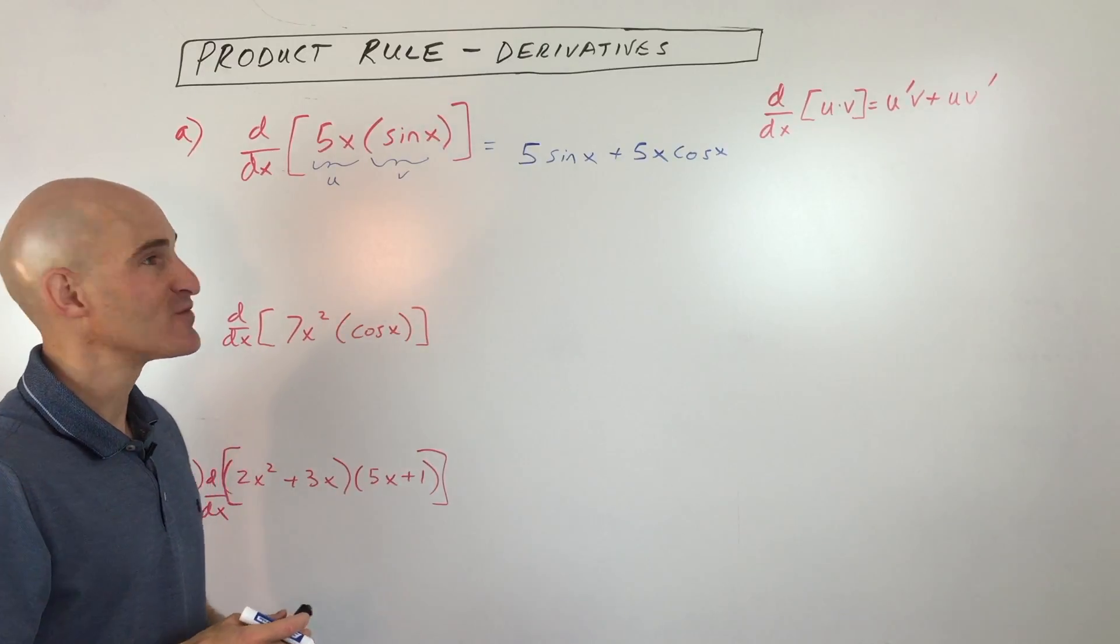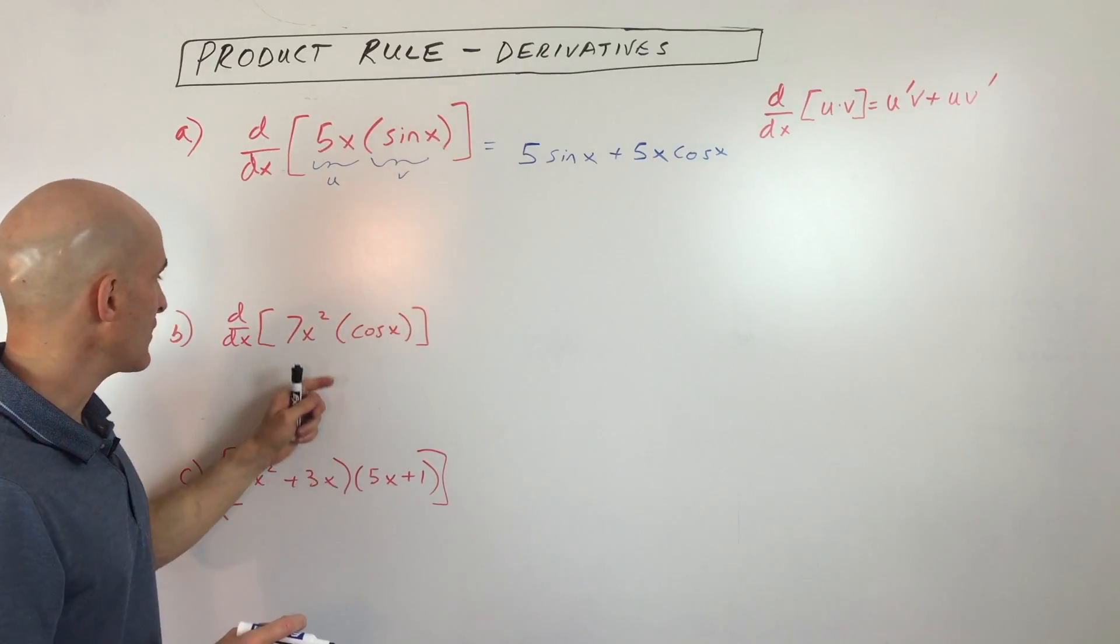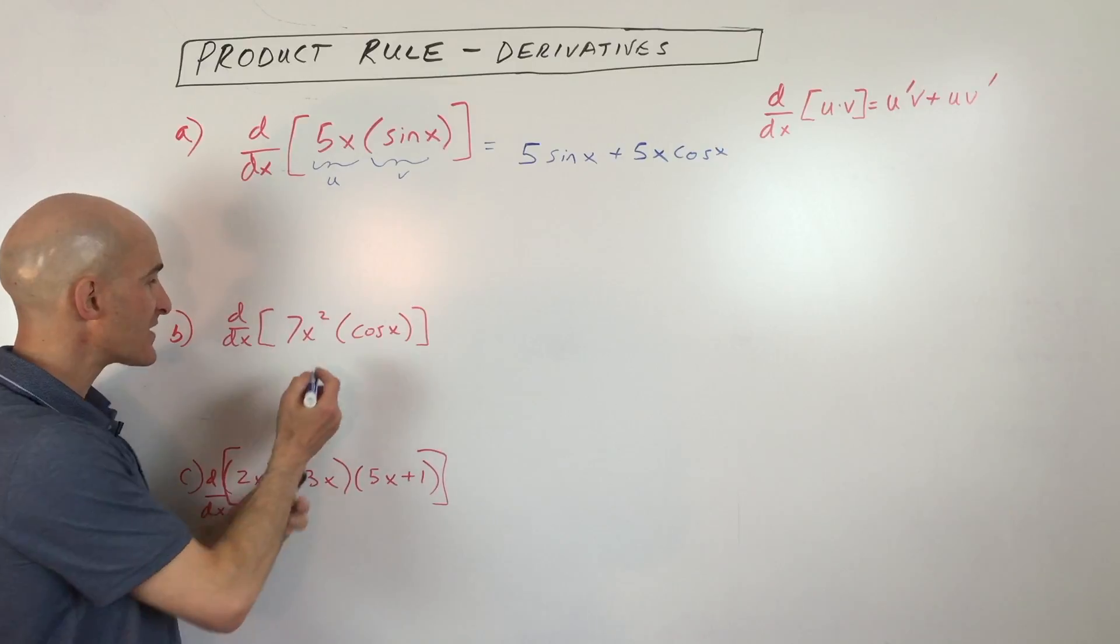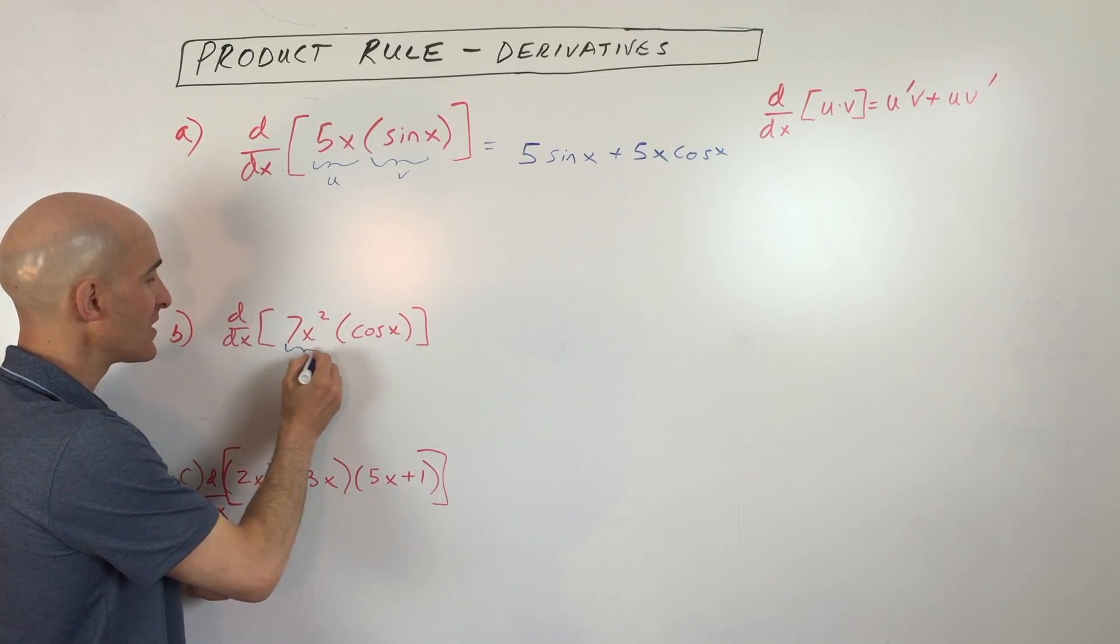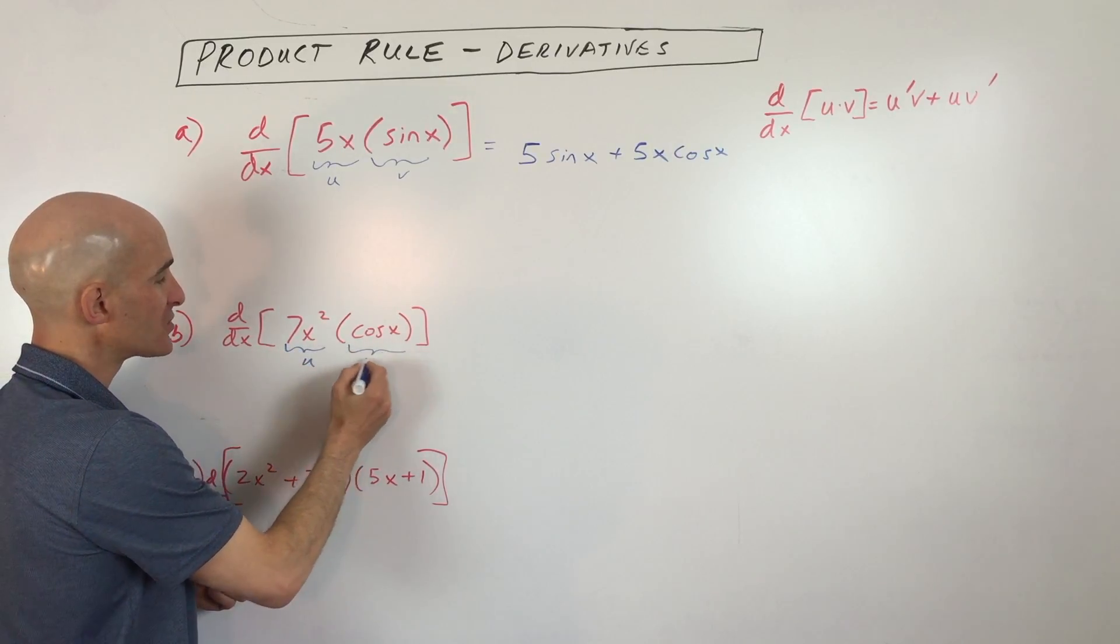Don't get confused by some books being slightly different. The next example, we've got 7x squared times cosine x. Let's just call this u, let's just call this v.